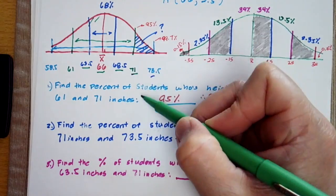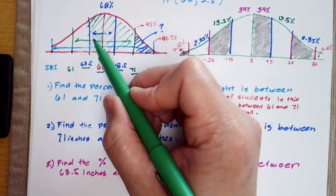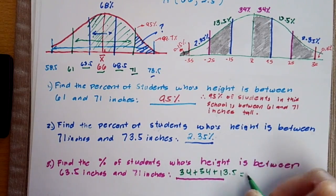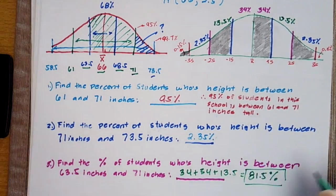to find the percent of students whose height is between 63.5 inches and 71 inches, notice that we have three partitions that we can use. To add this all up, we'll have 81.5% of students whose height is in between 63.5 and 71 inches.